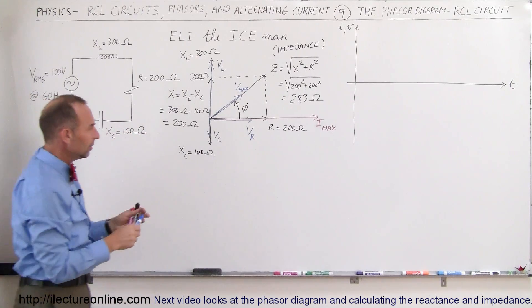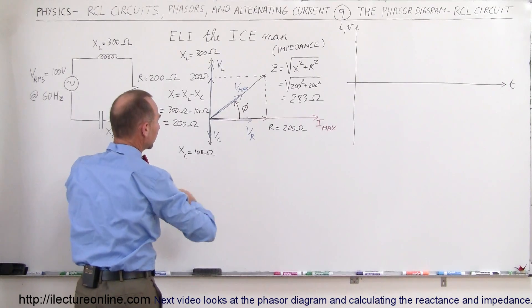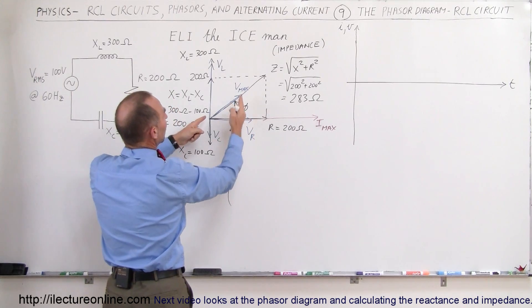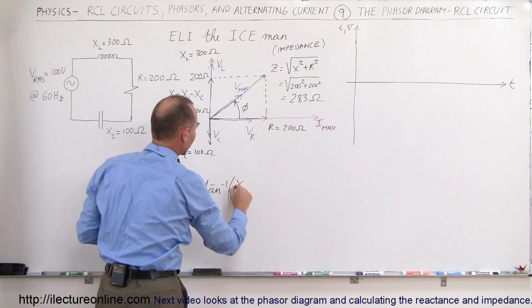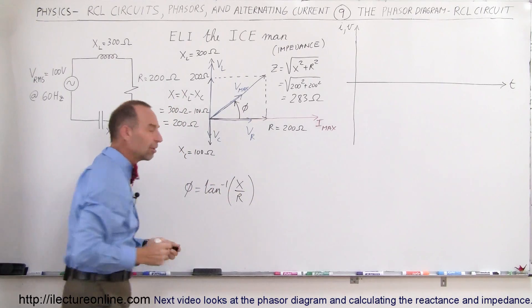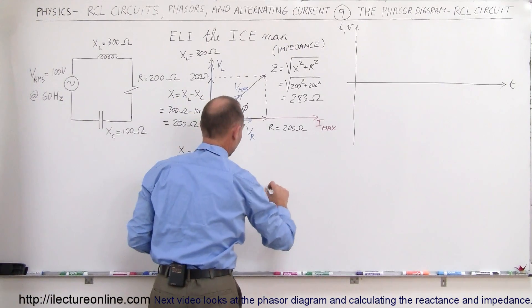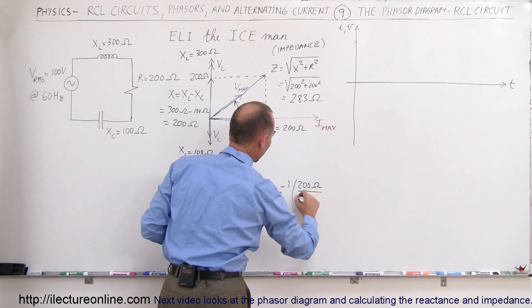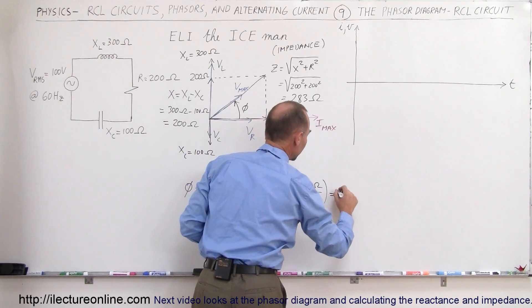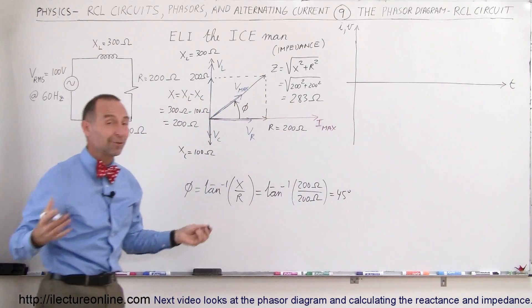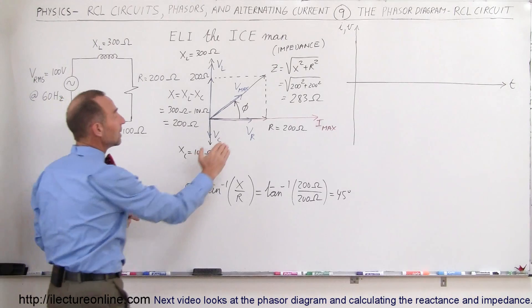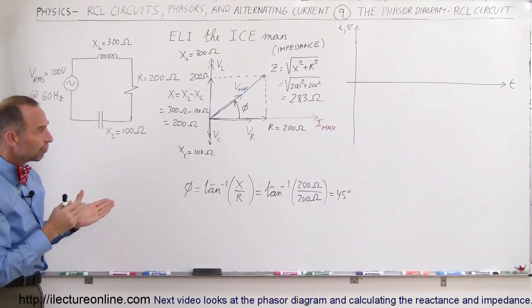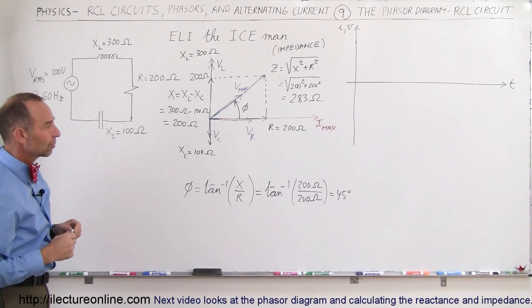To find the phase angle φ, we use the arctangent of the opposite side over the adjacent side — that is, arctangent of X over R. In this case that's arctangent of 200 ohms divided by 200 ohms, which is the arctangent of 1, meaning the phase angle is 45 degrees. This positive phase angle represents the difference between when the current reaches maximum and when the voltage reaches maximum in the circuit.